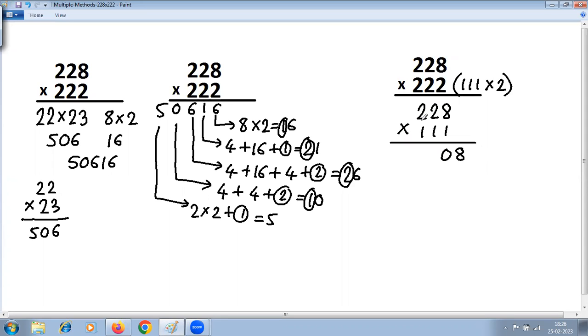2 plus 2 is 4, plus 8 is 12, plus carry 1 is 13. Again carry 1. 2 plus 2 is 4, plus carry 1 is 5. And then first digit as it is, 2. And then you have to perform this into 2.